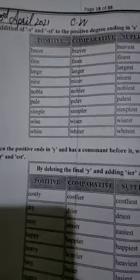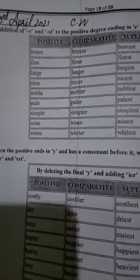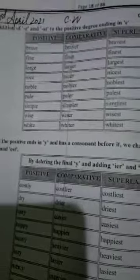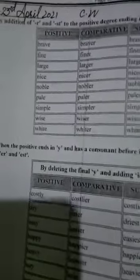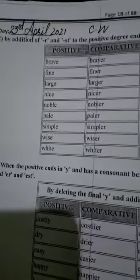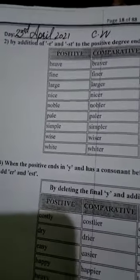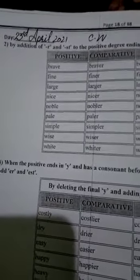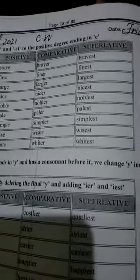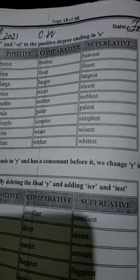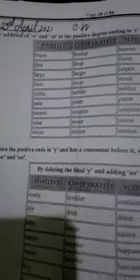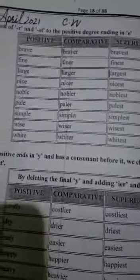In the comparative degree, you will put E and R. In the superlative degree, you will put E, S, T. This is the first table. All these words end in E at the end. You will add R to make the comparative degree, and E, S, T to make the superlative degree. You will change the degrees. This table you have to learn.